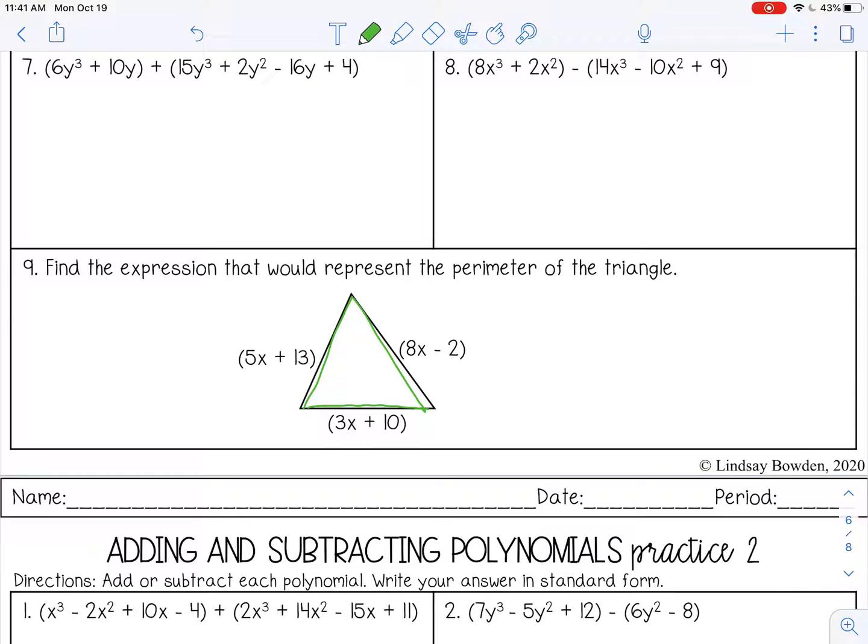So basically, it's the sum of all the sides. So sum means to add. So basically, we are adding those three expressions. So if you want to write it out, you can. So 5x plus 13. If you want to leave it in the parentheses, you can do that also. 8x minus 2, 3x plus 10.